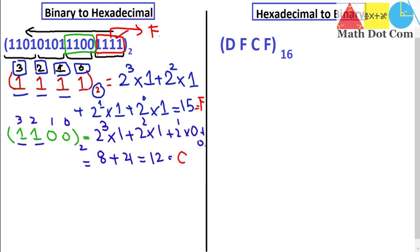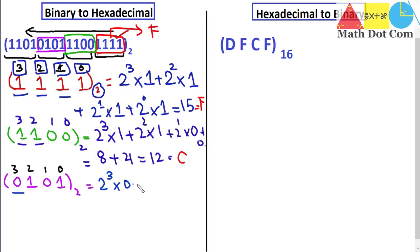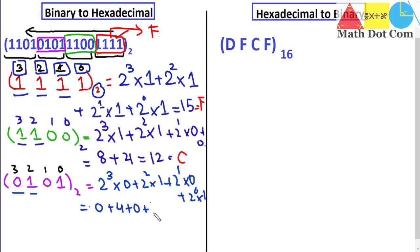Now we take another group of 4 bits: 0, 1, 0, 1. Using the same method with locations 0, 1, 2, 3, we calculate: 2 to the power 3 multiplied by 0, plus 2 to the power 2 multiplied by 1, plus 2 to the power 1 multiplied by 0, plus 2 to the power 0 multiplied by 1. This gives 0 plus 4 plus 0 plus 1, which equals 5.